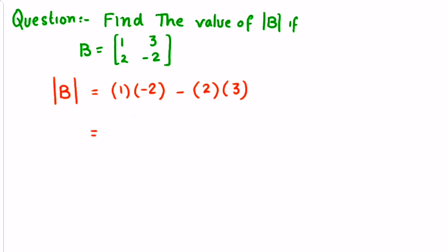So it will become minus 2. 1 multiplied by minus 2 minus 2 will become minus 6. When we add minus 2 and minus 6, we will get minus 8. So B determinant will be equal to minus 8. Thank you.